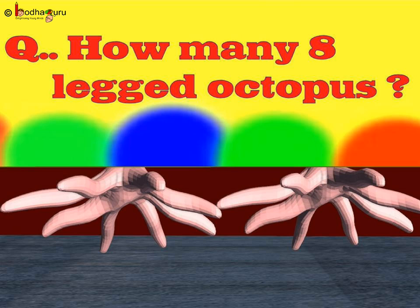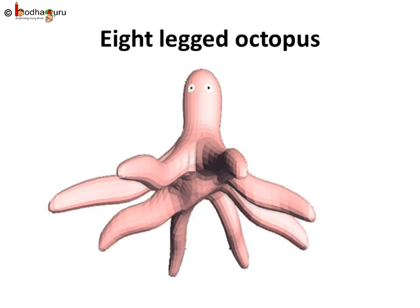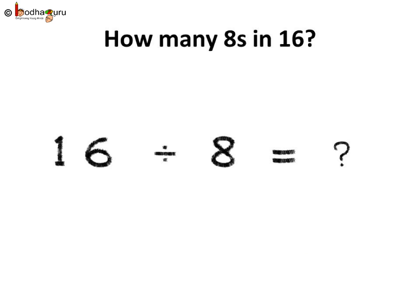How many octopuses are hiding behind the board? If we count the legs, 16 legs are there. We already know an octopus has 8 legs. So, we need to find how many groups of 8 can be made by using 16.